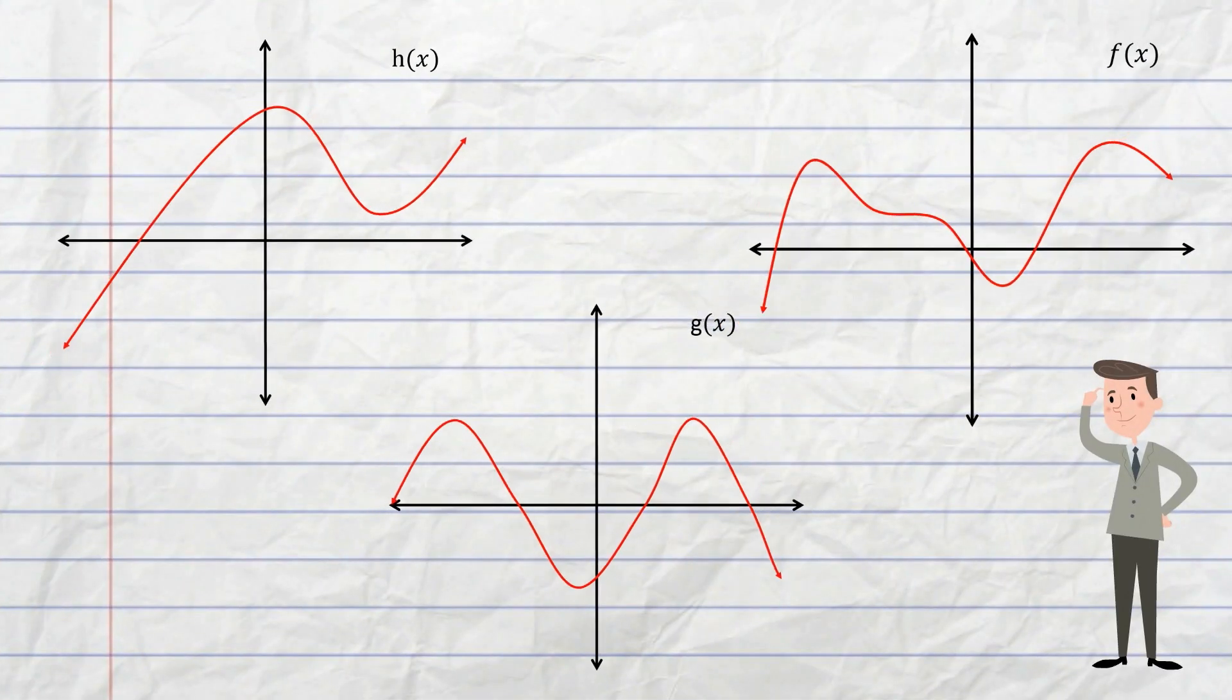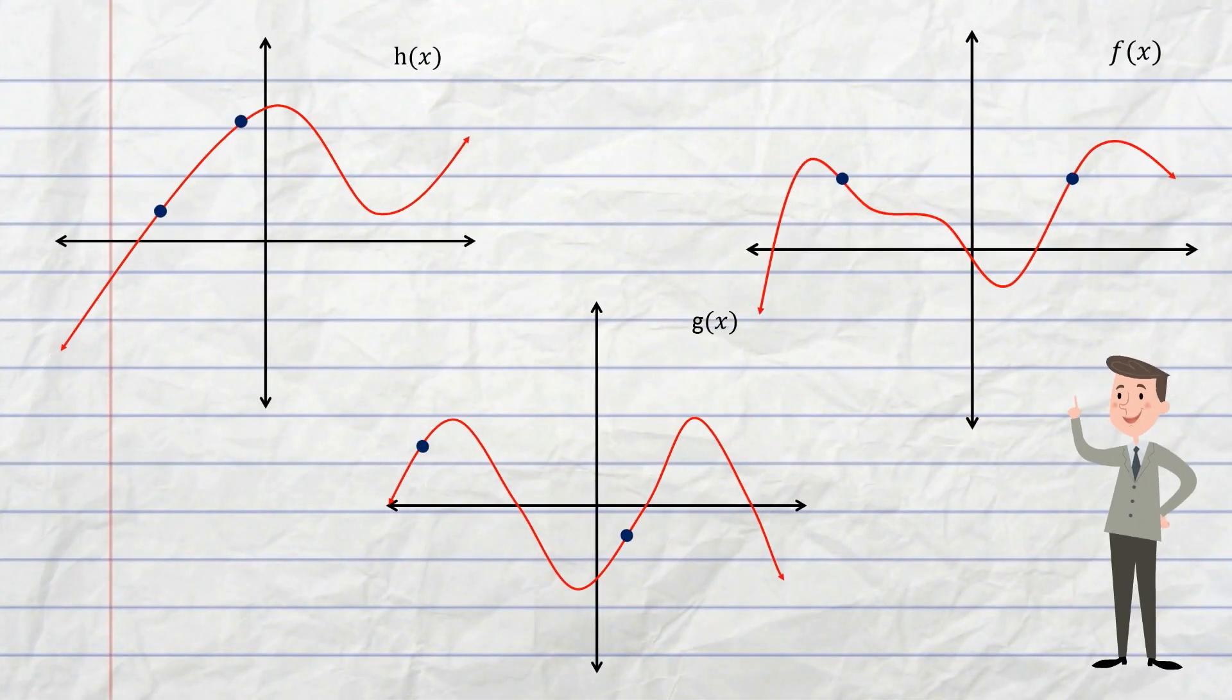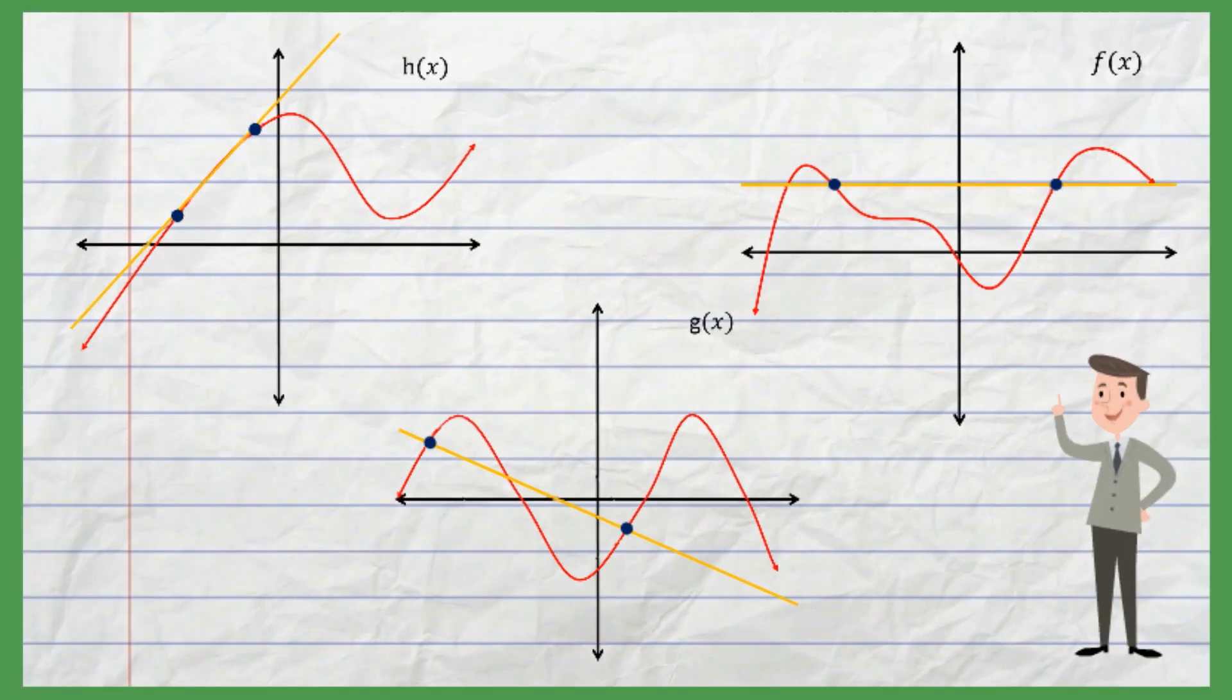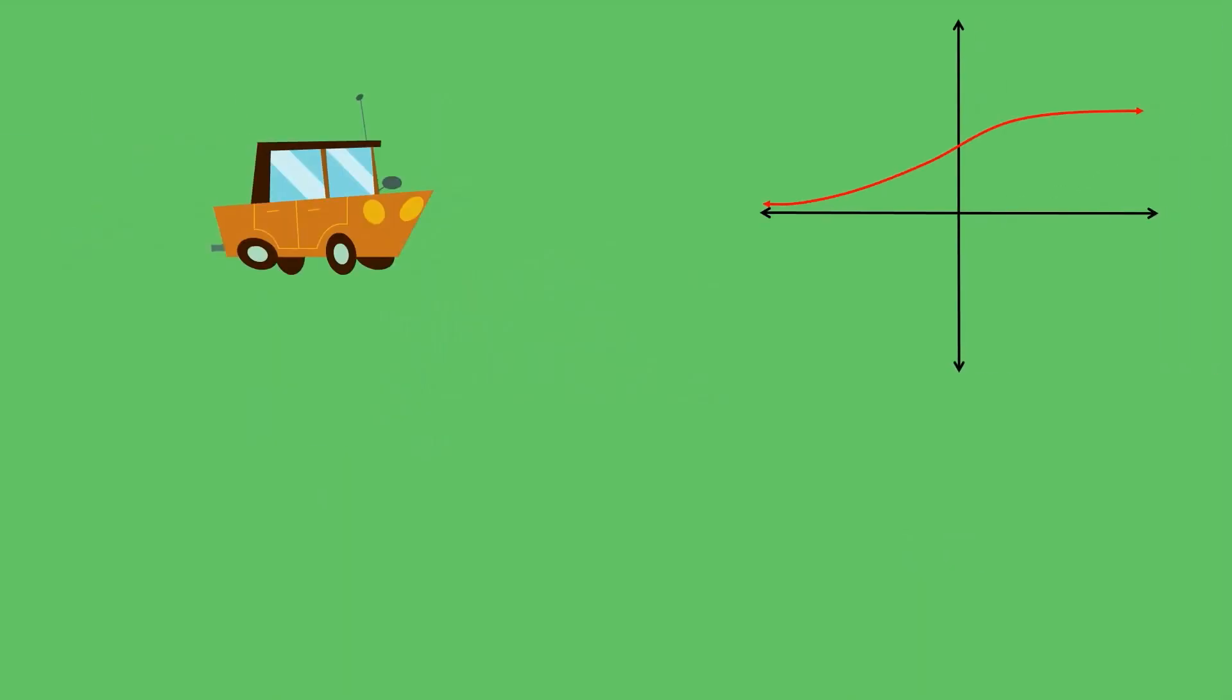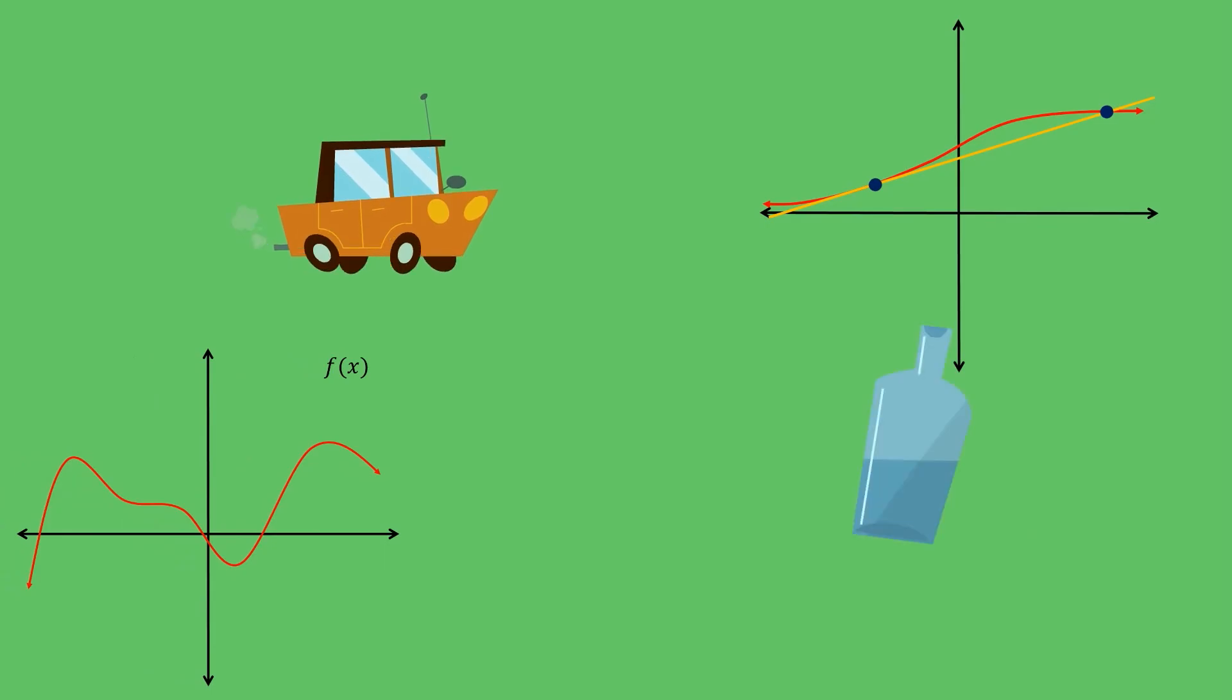So by describing the slope of a line between two points on a function we can get a lot of information about the behavior. Specifically its average rate of change. Depending on what the function describes this could give us information like the average speed of a car or the average flow rate from a tank of water. The possibilities are endless.